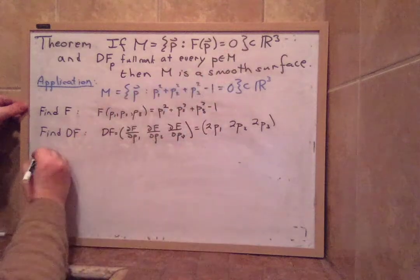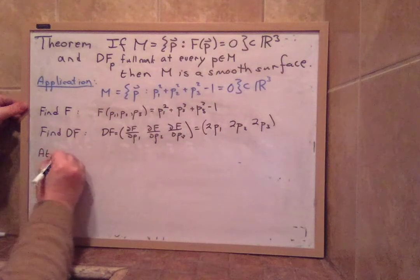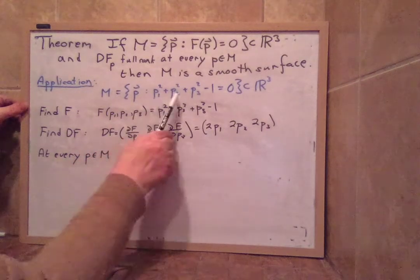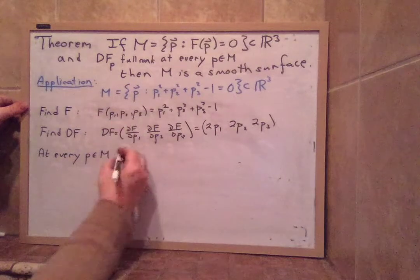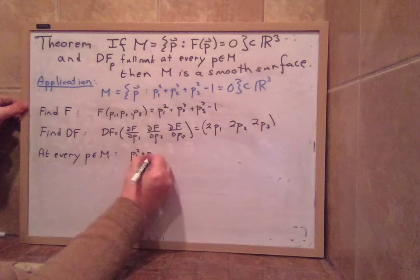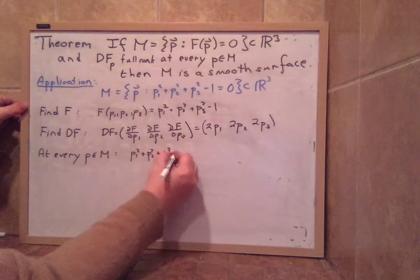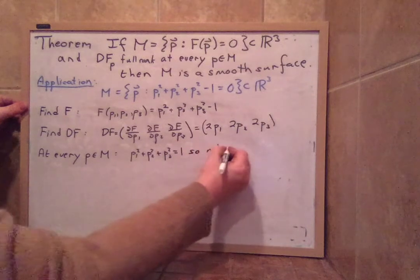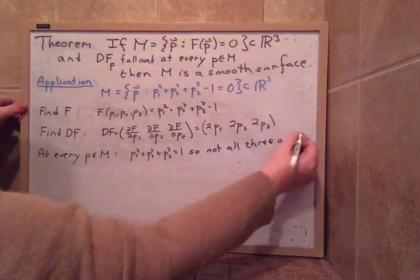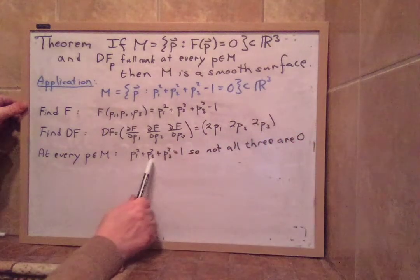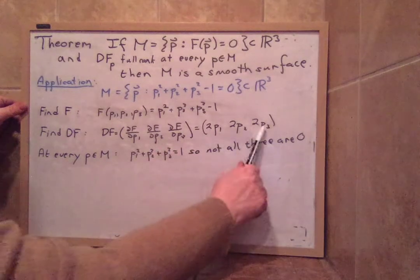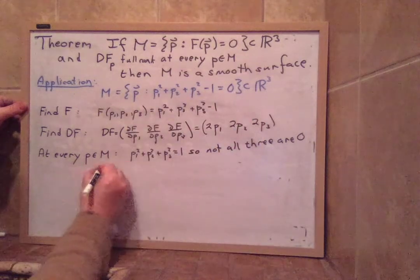At every point p in M, at every p in M, what do we know about every p in M? Well, we know that p1 squared plus p2 squared plus p3 squared equals 1. So not all three are 0. If all three were 0, we get 0 squared plus 0 squared plus 0 squared equals 1. So it's not true that all three are 0. That means one of them is not 0. So at least one is not 0.